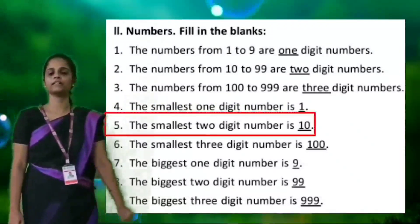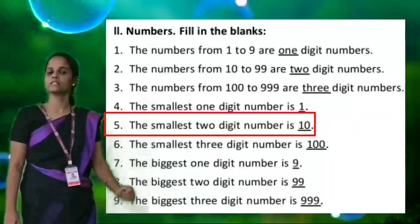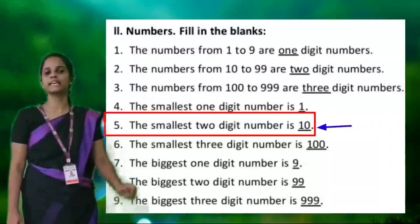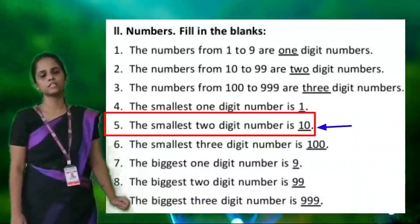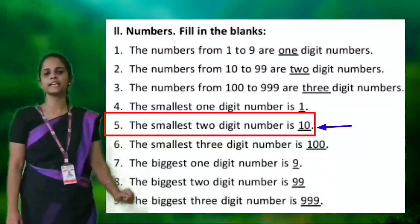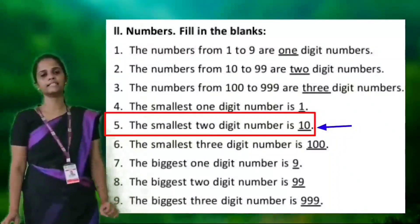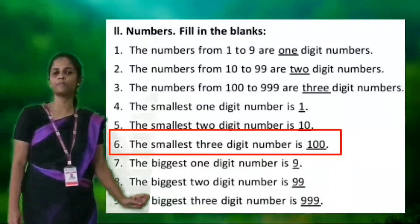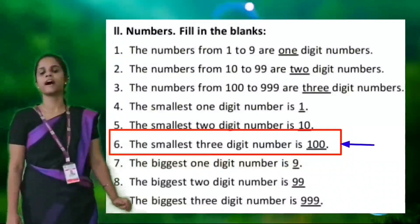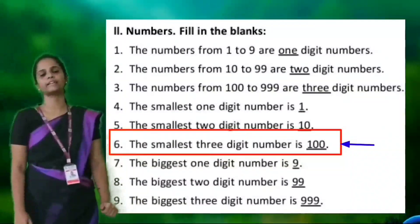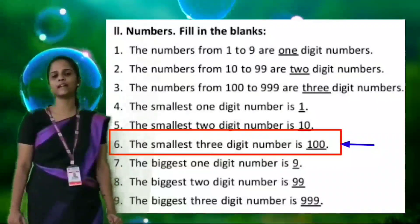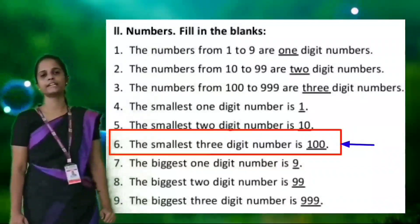Fifth: the smallest two digit number is 10. Sixth: the smallest three digit number is 100.